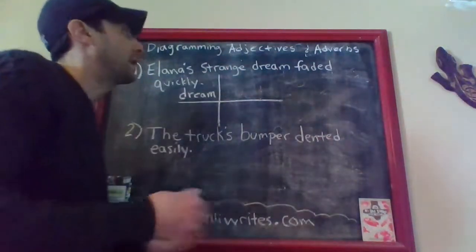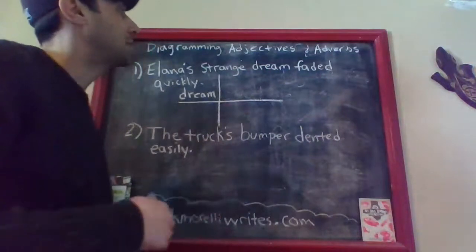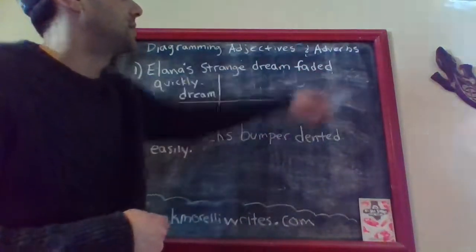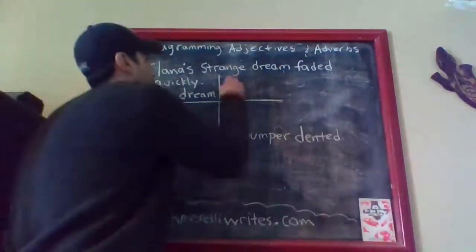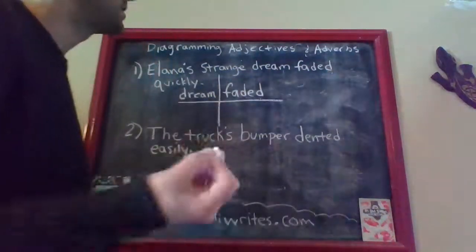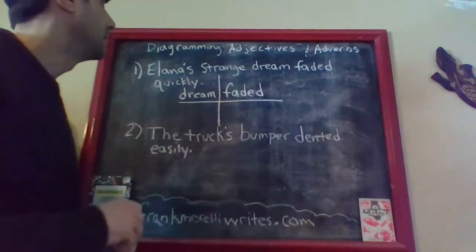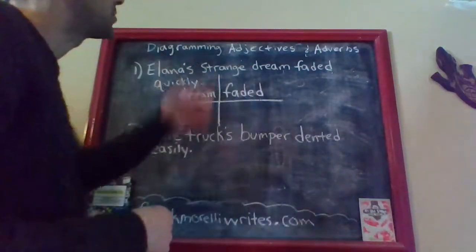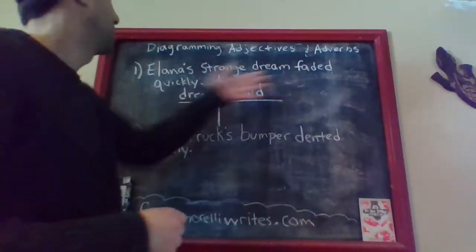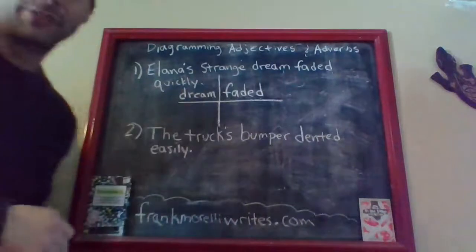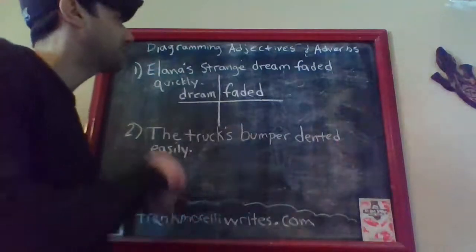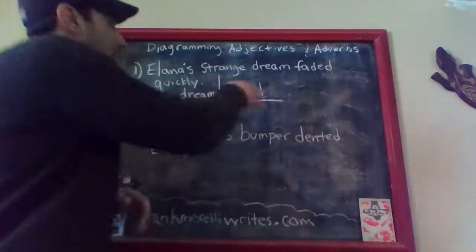Now we are going to look for the simple predicate — the verb, the word that shows action. 'The dream faded' — that is the action that the dream is committing. 'Faded' is your simple predicate, and you put that in the spot where you normally put a simple predicate on the diagram. Now you are going to see if there are any direct or indirect objects. You would ask yourself the 'what' and 'for whom' questions. 'Alana's strange dream — what?' Well, there is no real answer in this sentence for that, which means there is no direct object, and if there is no direct object, there cannot be an indirect object.